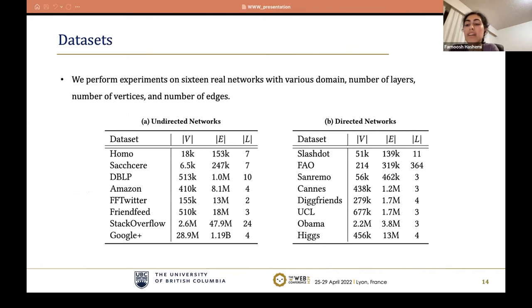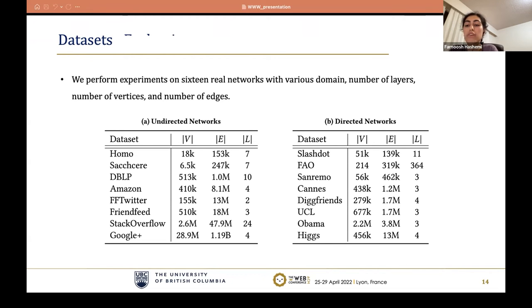We perform experiments on 16 real networks covering social, biological, financial, co-purchasing, and collaboration domains, with edges ranging from hundreds of thousands to one billion. First, we evaluate the efficiency of firm core. The first two algorithms are the firm core algorithm in single-processor and multi-processor settings; core cube is the algorithm for core cube decomposition; and other algorithms are for multi-layer k-core decomposition. We found that in large graphs, firm core is two orders of magnitude faster than other algorithms. For small networks like FAO with a large number of layers, state-of-the-art algorithms couldn't terminate before 10 days, while firm core terminates in less than two minutes.